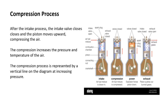The next process is the compression process. After intake, the intake valve closes and the piston moves upward from BDC to TDC, compressing the air. This increases the pressure and temperature of the air. The compression process is represented by a vertical line on the diagram at increasing pressure.